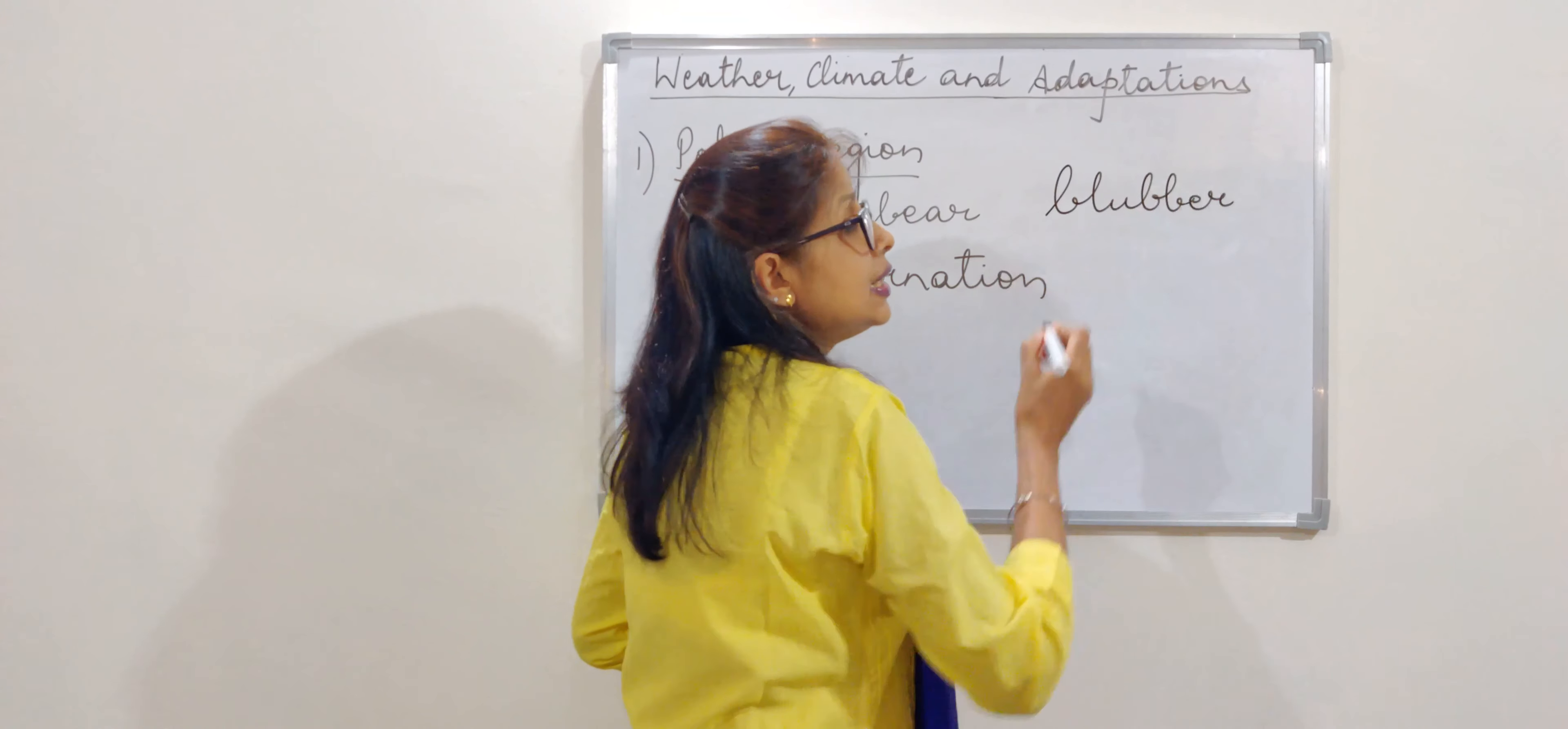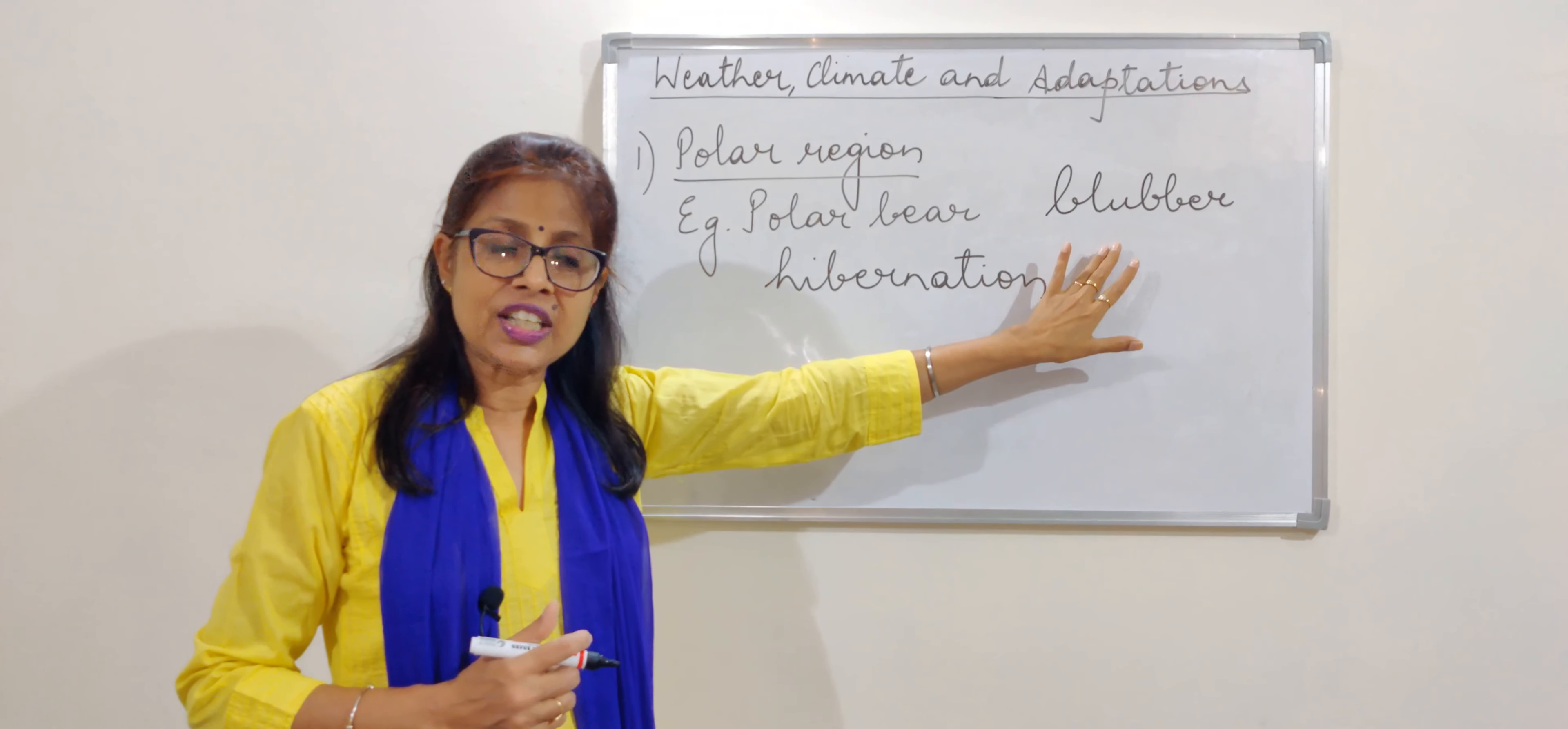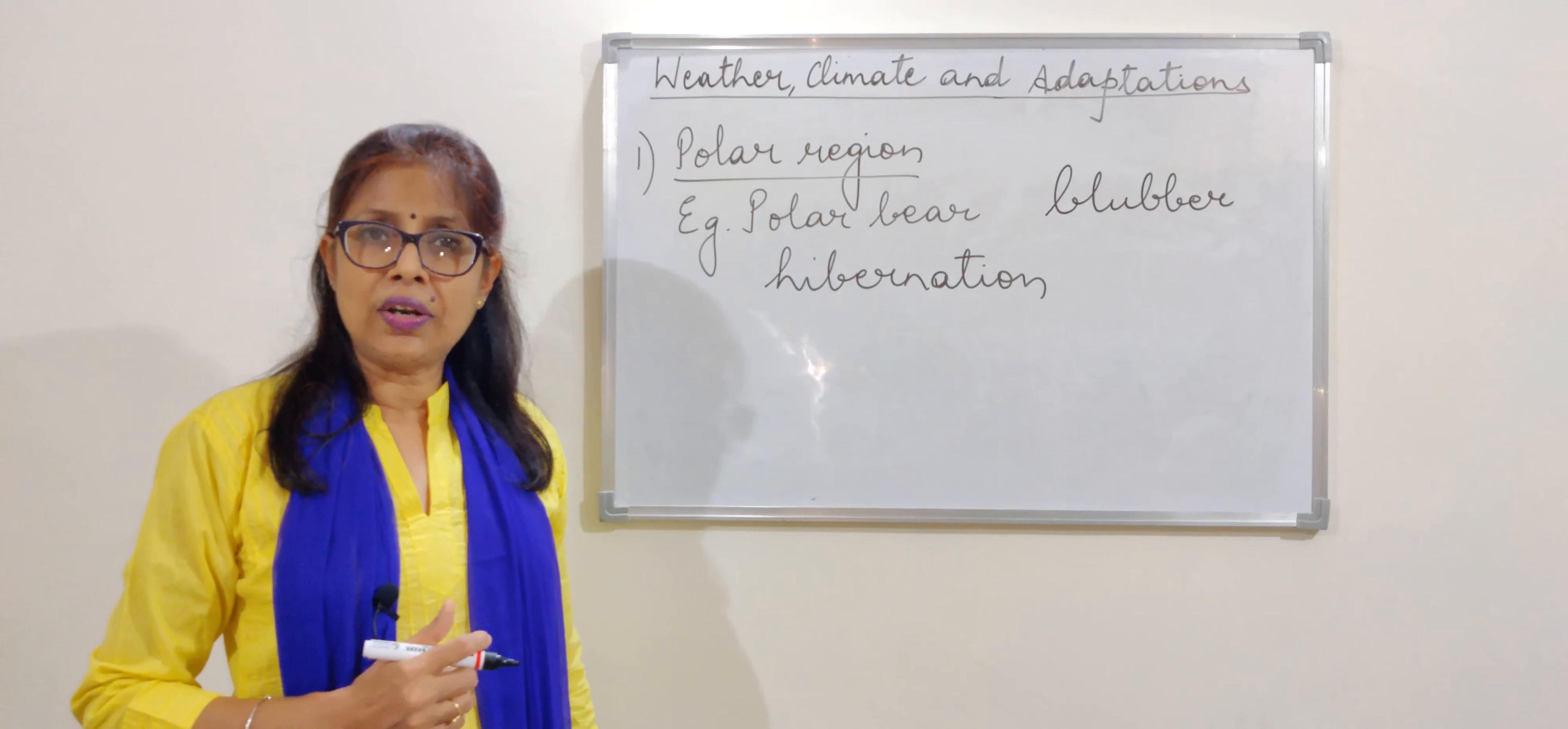Along with that, they also have a layer of fat below their skin called the blubber. This blubber is a layer of fat which is actually giving them insulation. Just like we wear woolen clothes in winter to keep ourselves warm, nature has provided them with a layer of fat which keeps them warm. So these are some of the characters of the animals living in the polar region.